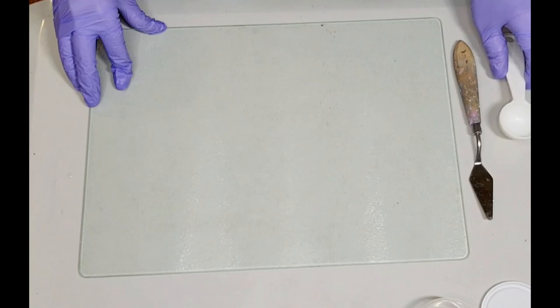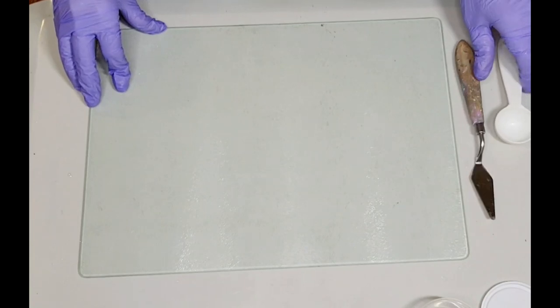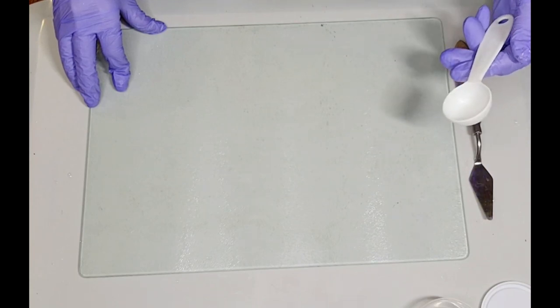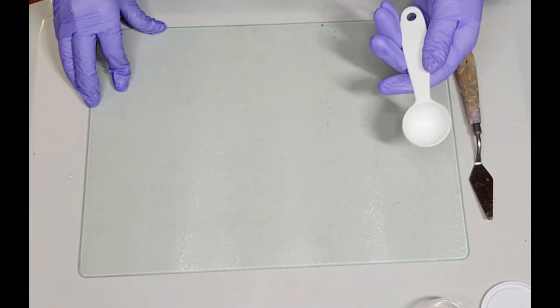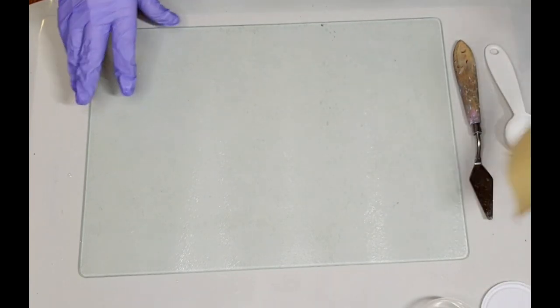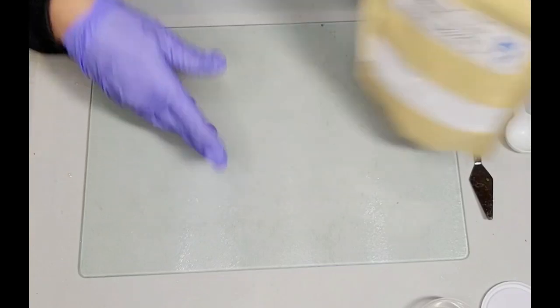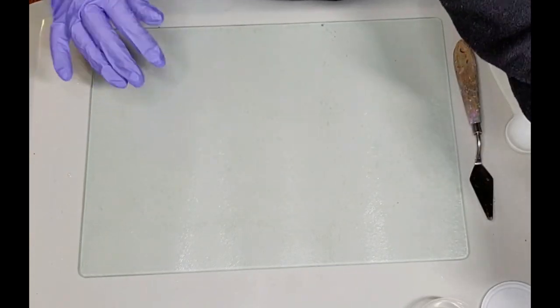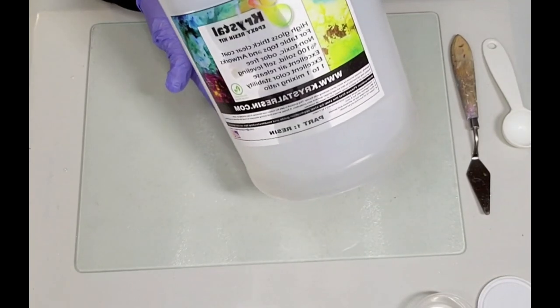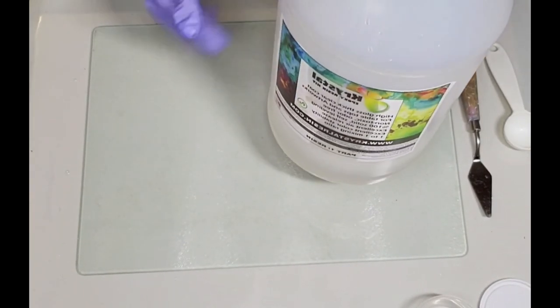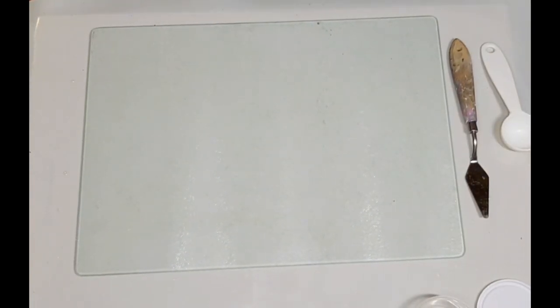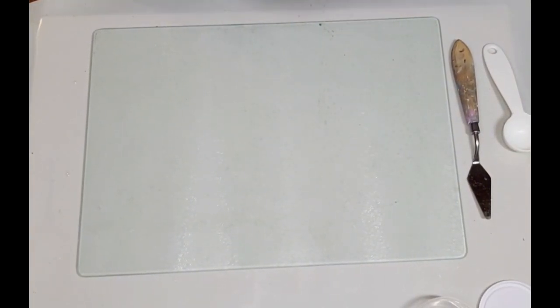I normally don't measure when I do this but for video sake I am going to measure this time around. So I have a tablespoon measuring thing here and you're going to need titanium dioxide and resin. So this is part one, you'll need the actual resin and not the hardener. If you add the hardener it's just not going to work, you just need the resin.